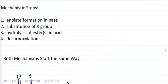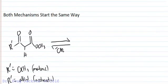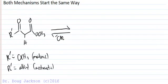We hydrolyze the ester for acetoacetic, we hydrolyze the esters, multiple esters for malonic ester synthesis, and then we decarboxylate by heating in aqueous acid. So let's look at this and see how they both start in the same way.